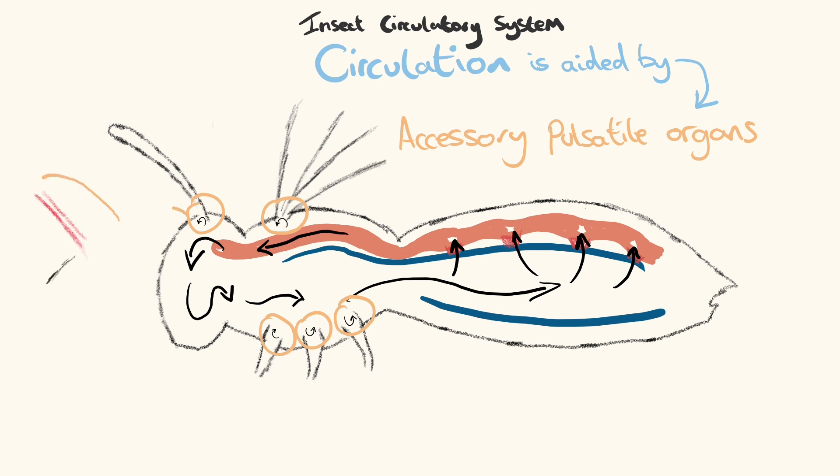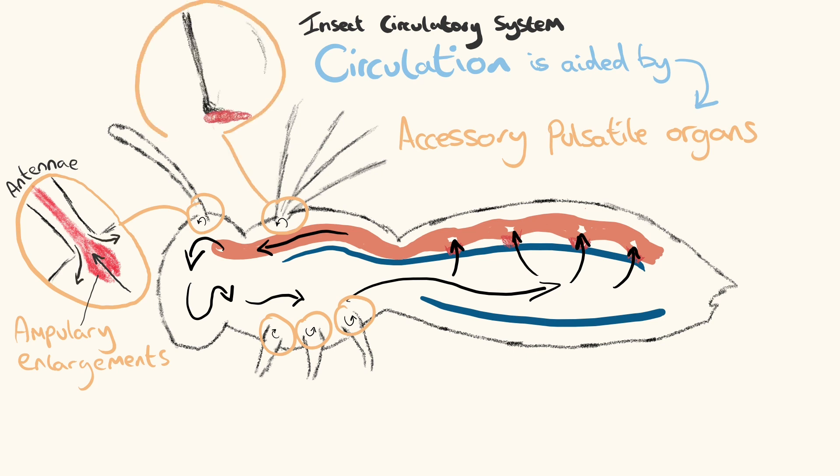The antennae contains vessels with anterior enlargements which possess elastic properties within their walls. These interact with associated muscles for the dilation and compression of vessels to help pump haemolymph into the antennae. The wings also have accessory organs located in the thorax.